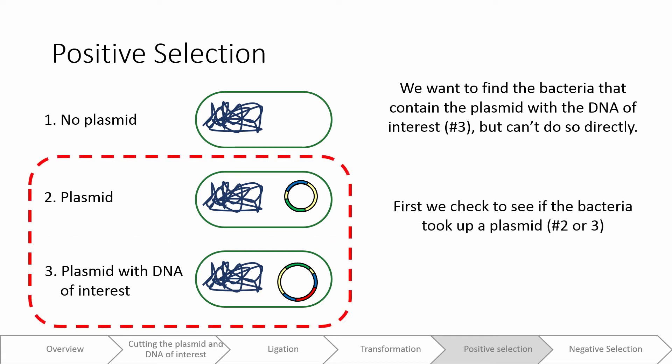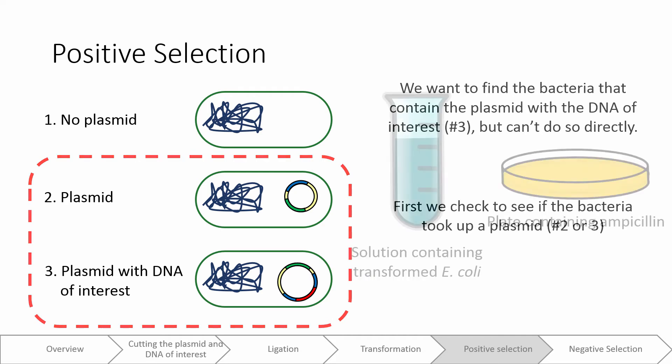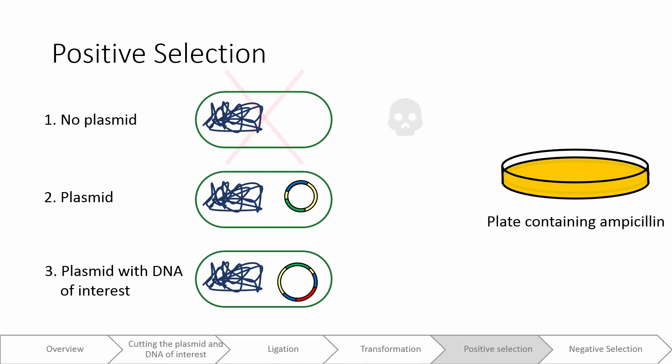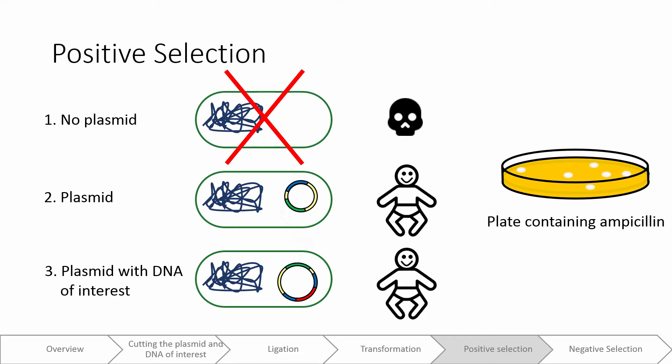The first thing we will do is to determine if our E. coli have successfully taken up a plasmid, regardless of if it has our DNA of interest or not. To do this, we plate our E. coli on a media that contains ampicillin. Why did we choose ampicillin? We use ampicillin to positively select for the E. coli that have taken up a plasmid. The bacteria that have not taken up a plasmid die due to the ampicillin.